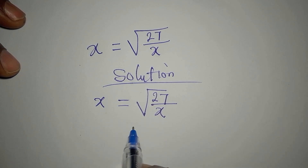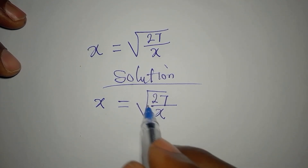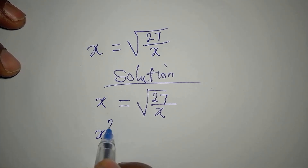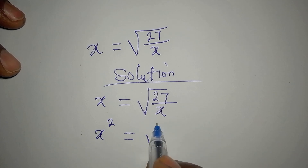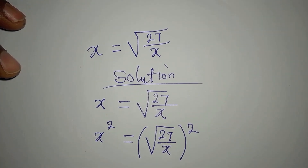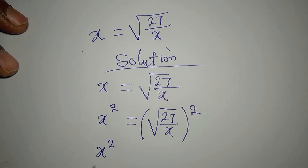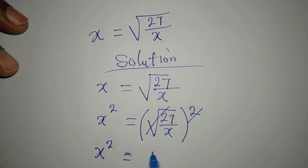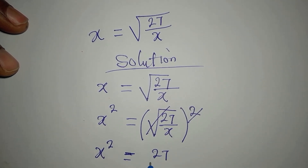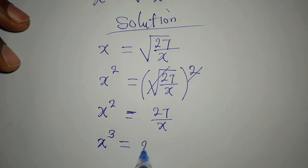The first thing we are going to do is remove the square root. To do that we'll square both sides: x squared on the left, and the square root of 27 divided by x, squared, on the right. The square root cancels, leaving 27 over x. Cross-multiplying gives us x times x squared, which is x cubed, equal to 27.